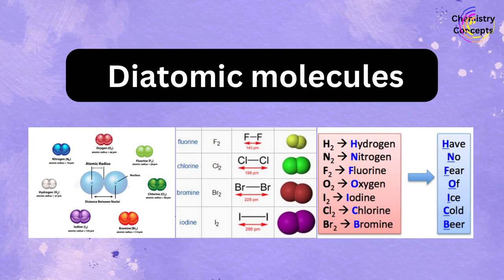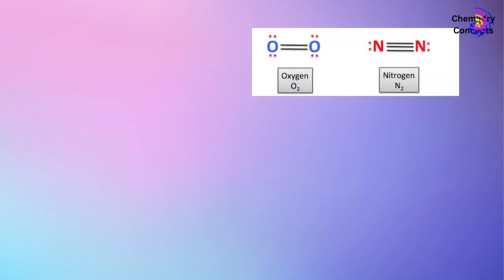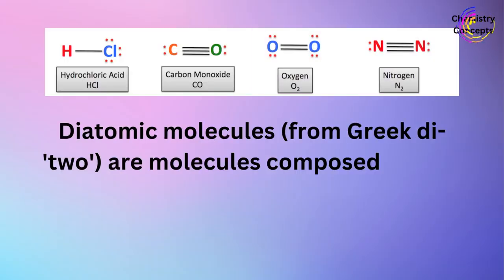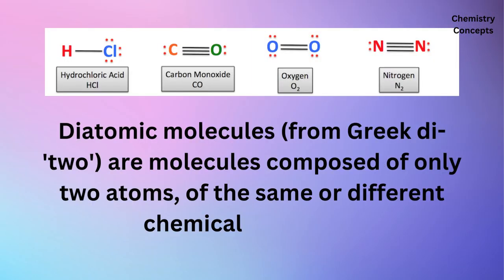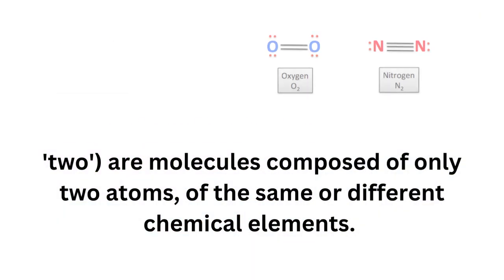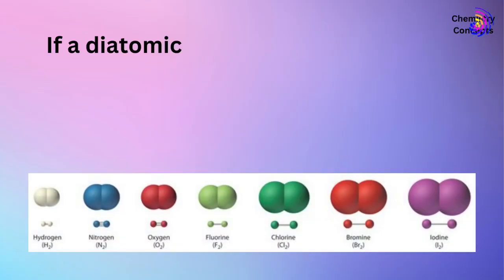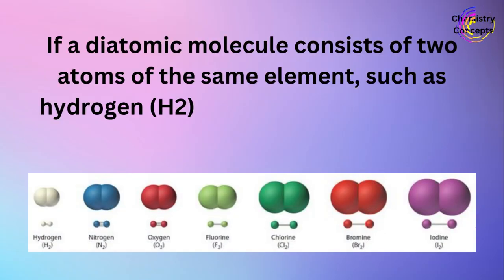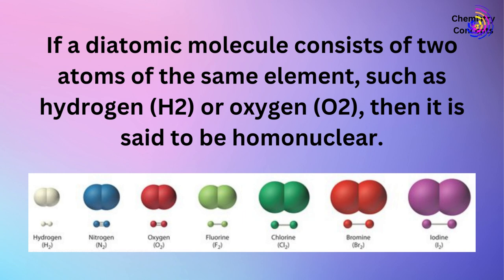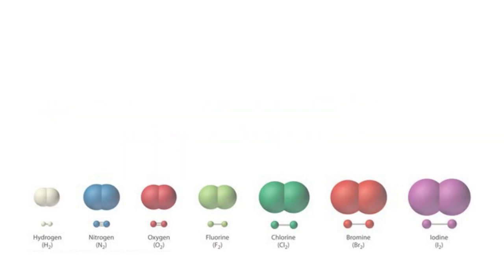Diatomic molecules, from Greek 'di' meaning 2, are molecules composed of only two atoms, of the same or different chemical elements. If a diatomic molecule consists of two atoms of the same element, such as hydrogen (H2) or oxygen (O2), then it is said to be homonuclear.